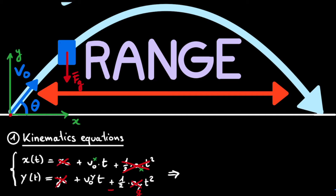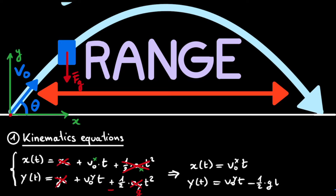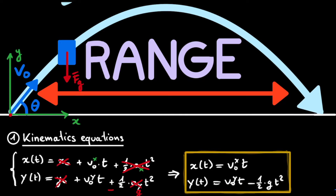Thus, we can rewrite our equations in a simpler form. We have x(t), which is equal to simply the initial velocity in the x direction multiplied by t. And likewise, for y(t), we get the initial velocity in the y direction multiplied by t, minus one half multiplied by g, multiplied by t squared. It will be these two simplified equations that we will now use to derive the formula for the range.